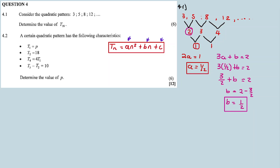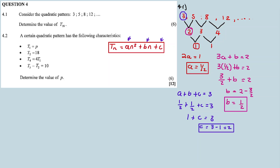Now we calculate c using the formula a plus b plus c equals the first term, which is 3. Substituting a equals 1/2 and b equals 1/2: 1/2 plus 1/2 is 1, so 1 plus c equals 3, which gives c equals 2. Now that we have a, b, and c, we substitute into the general formula. The n-th term is Tn equals 1/2 n squared plus 1/2 n plus 2.